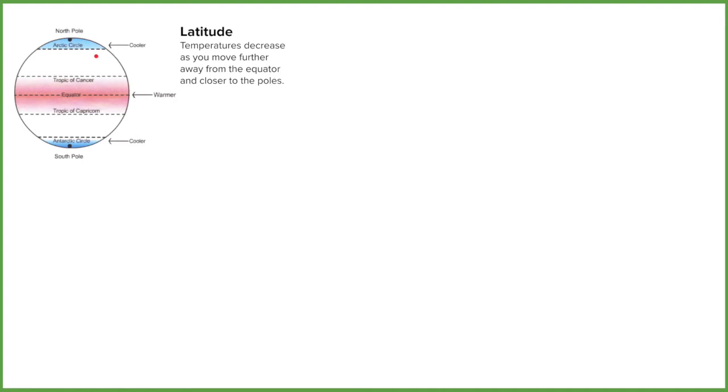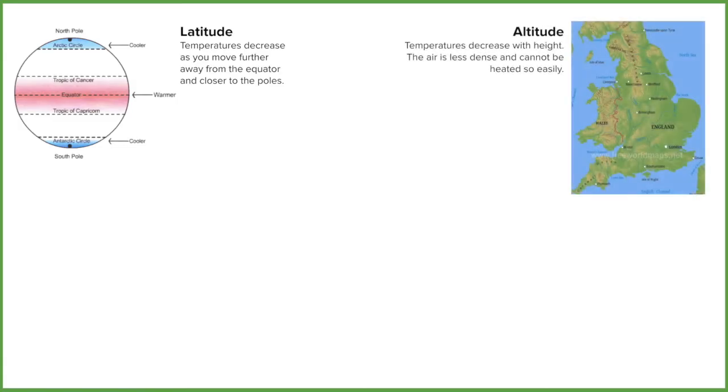But also depending on where you live in the UK, the further north that you go, it's also going to get colder there because you're still going to be going further away from the equator in terms of latitude. The second one is altitude, and altitude is another way of saying height.